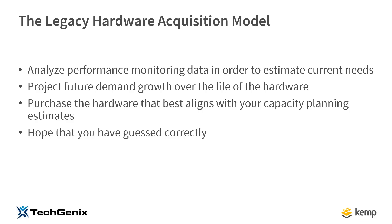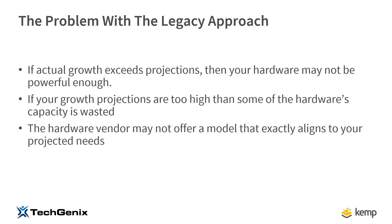After making projections, the next step is to purchase hardware that best aligns with the capacity planning estimates, and then all we can do is hope we've guessed correctly. The biggest problem has to do with hardware sizing. If actual growth exceeds projections, the hardware might not be adequate — for example, a hardware load balancer that gets ten times the projected traffic may not keep up. But the opposite can also be true: if you get ten times less traffic than estimated, much of the capacity is being wasted, and we've essentially wasted a lot of our investment.